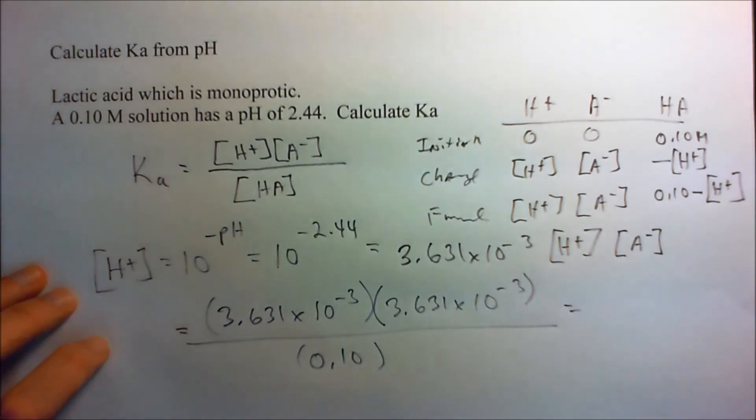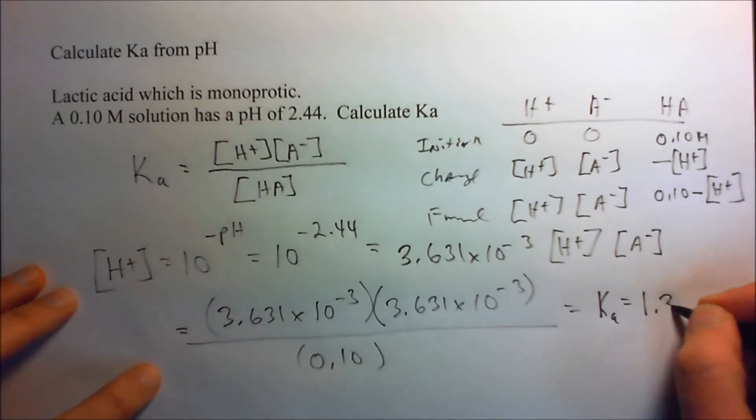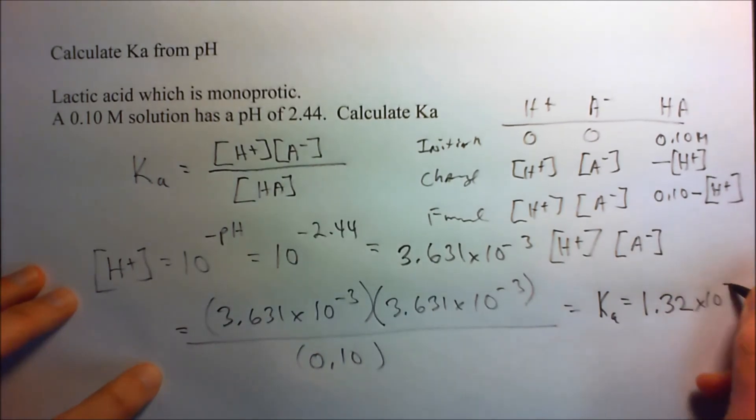And we put all of this in our calculator. And we get a Ka equal to 1.32 times 10 to the minus fourth.